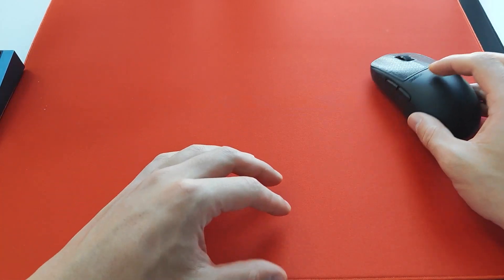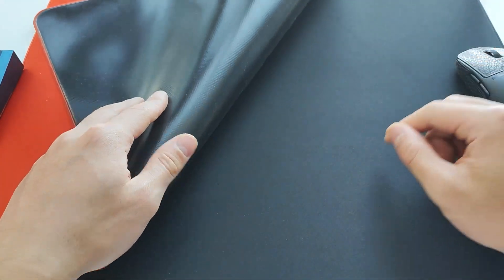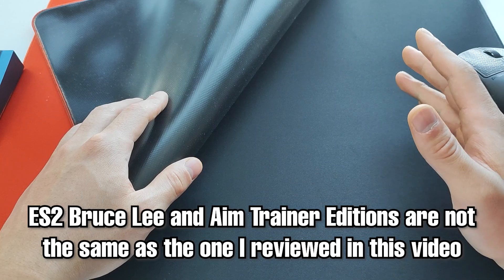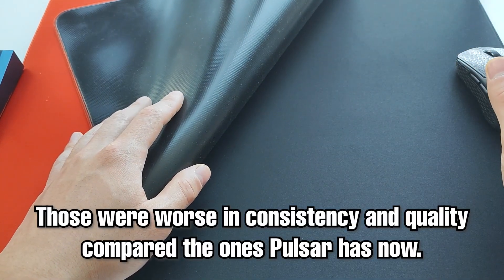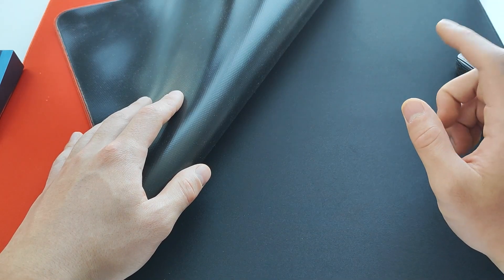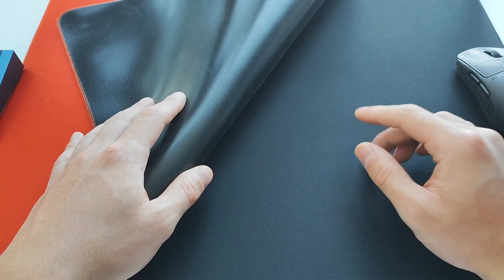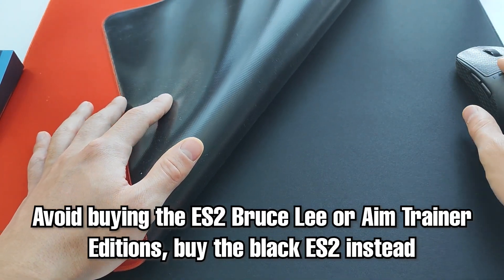Now a final thing to note is that the Bruce Lee and Aim Trainer versions of the ES2 is apparently not the same as the black one we have now. Those are supposedly worse in quality and consistency, so do yourself a favor, and if you are going to buy an ES2, make sure you buy the black one. Don't go for the Bruce Lee or the Aim Trainer versions.